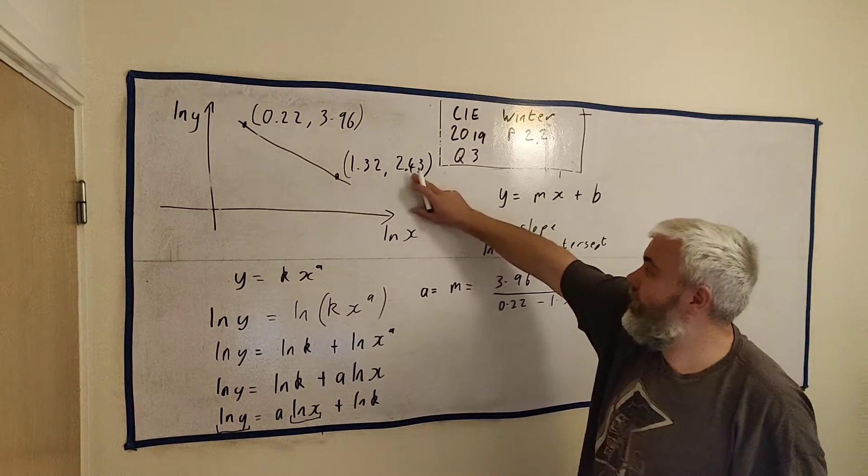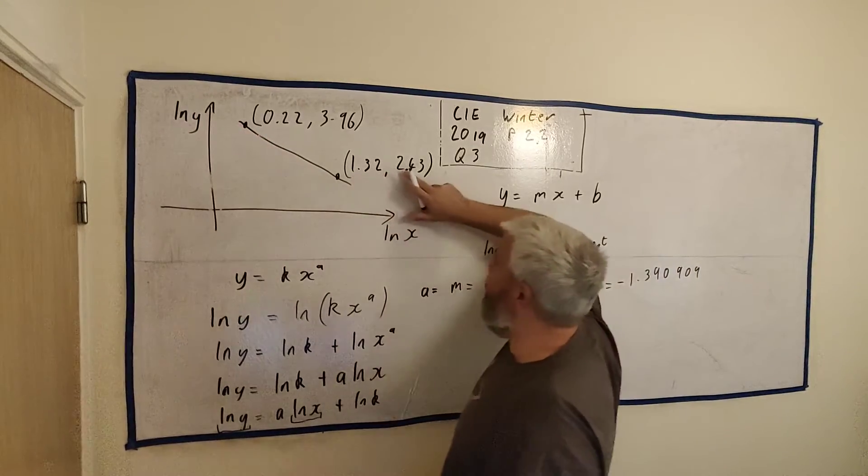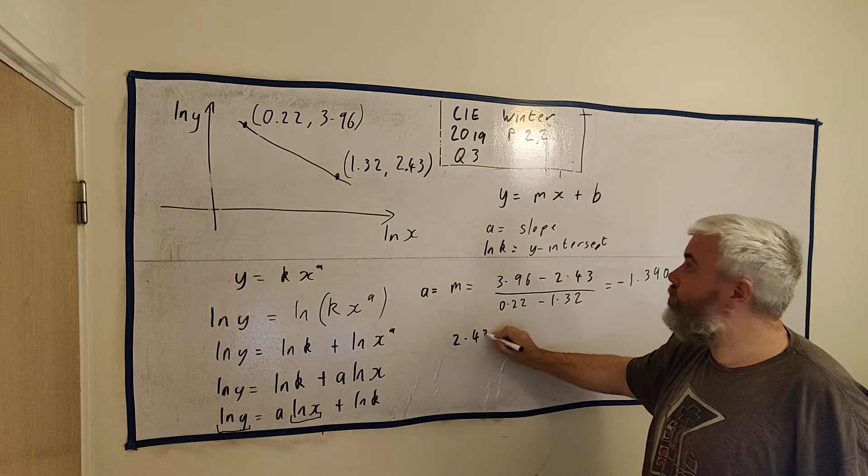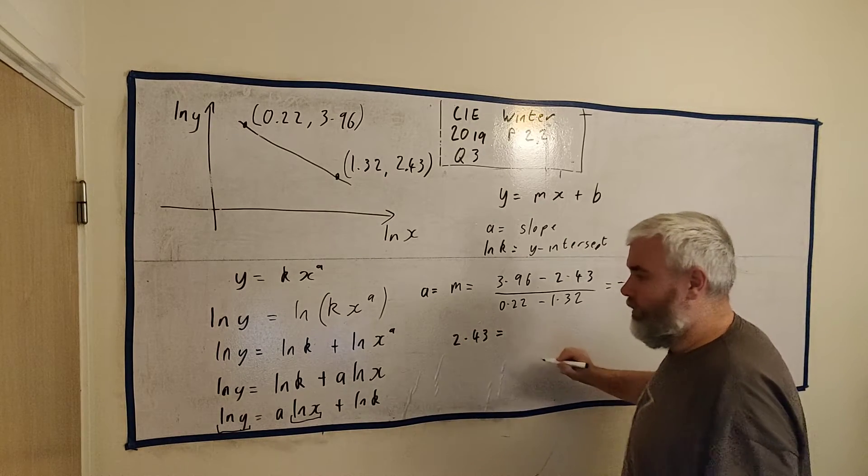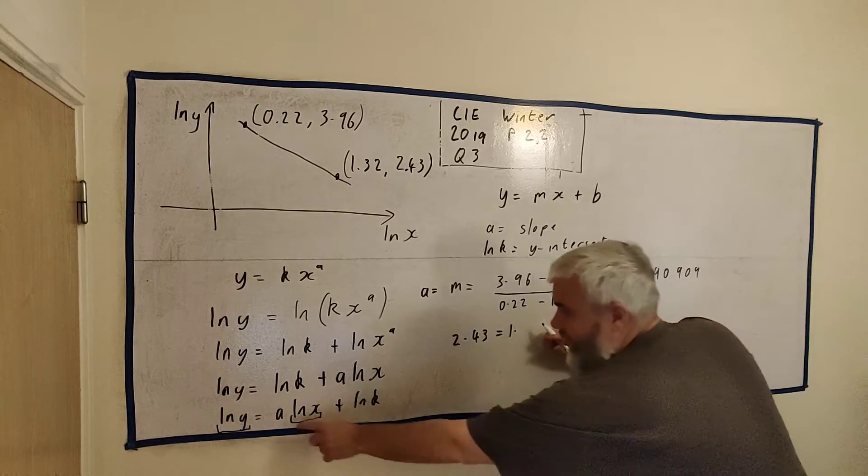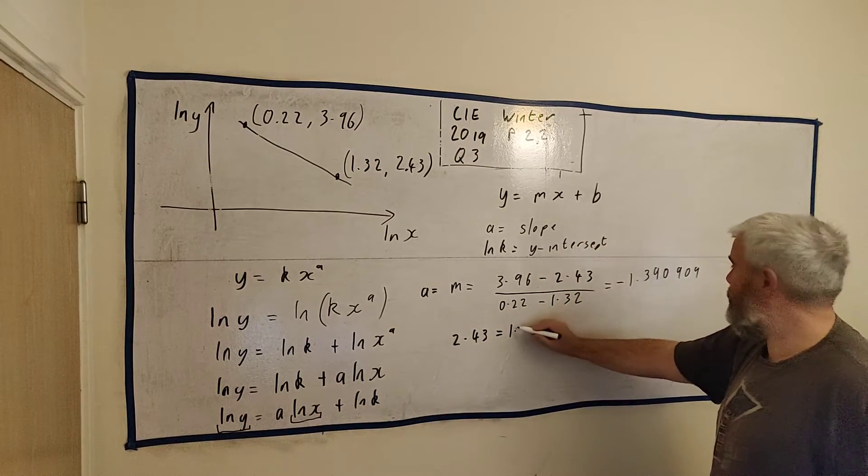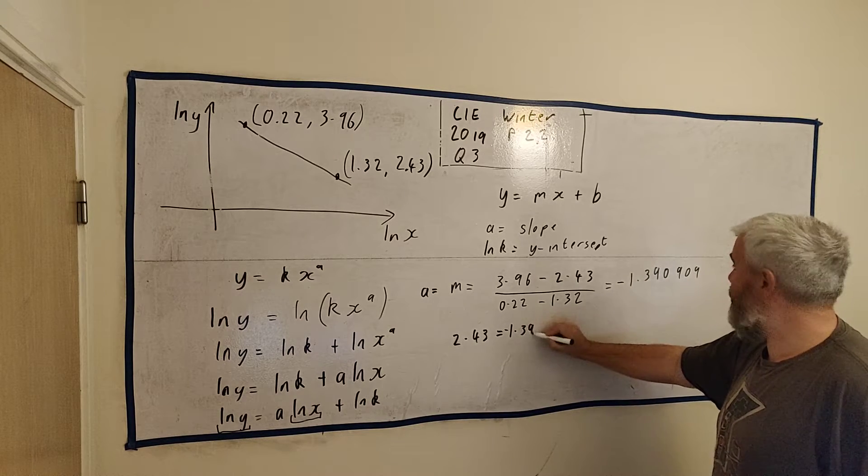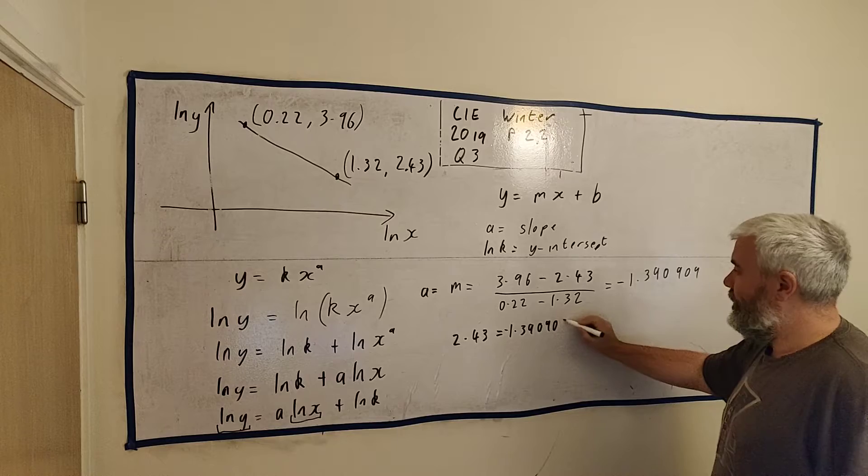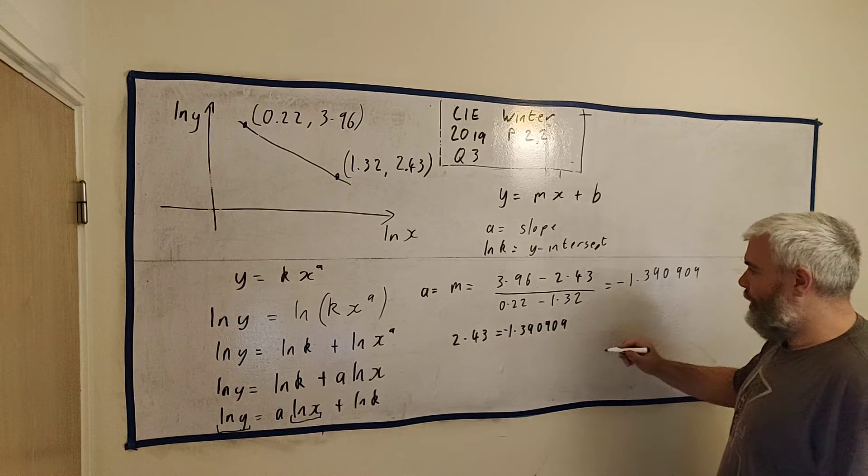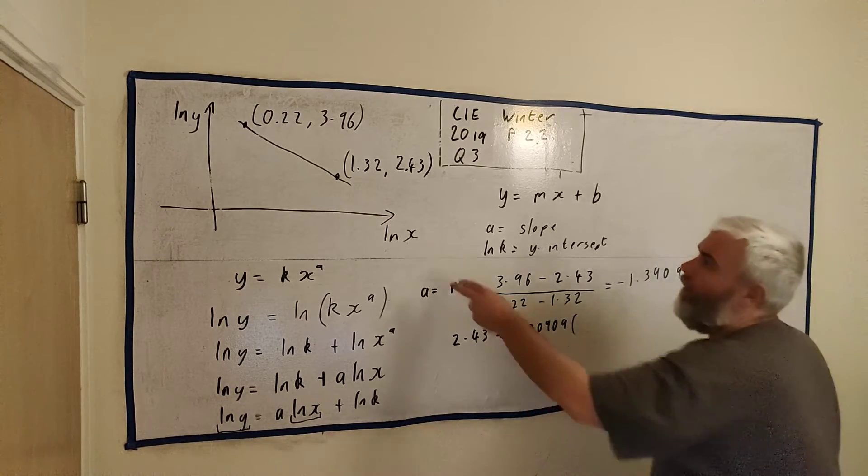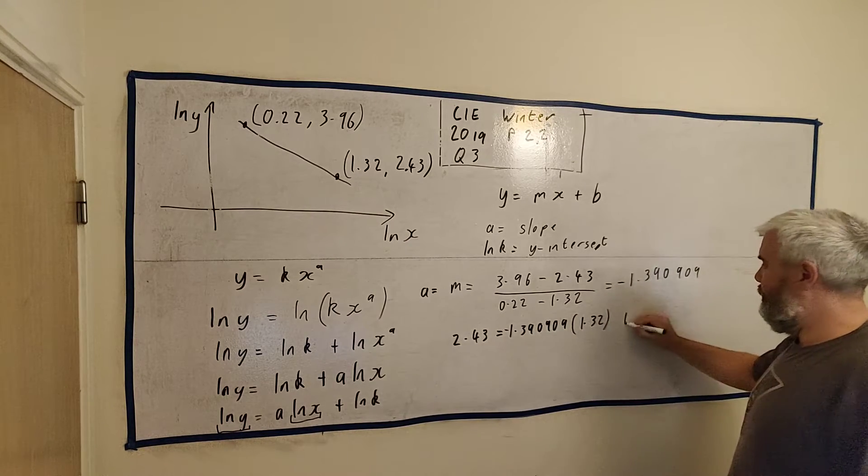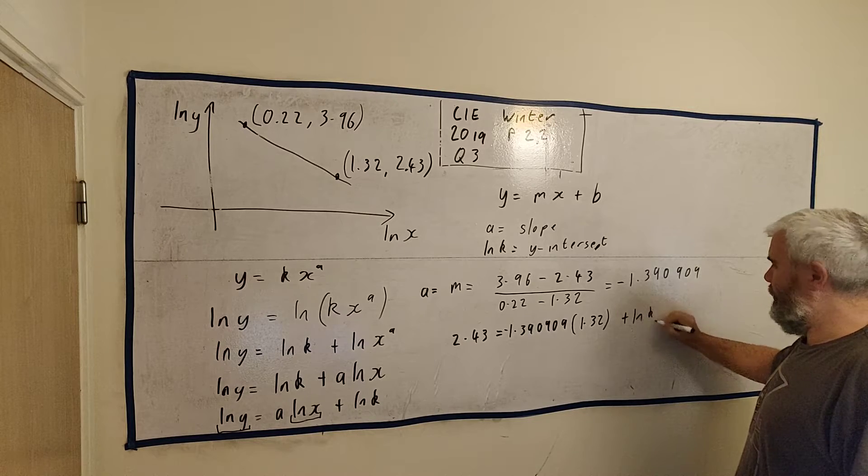Instead of natural log y, because here's natural log y, we get 2.43 is equal to, and we get this number here, that's a, is equal to, this is minus, apologies, minus 1.390909. Natural log x multiplied by natural log x is 1.32. And then plus natural log k.